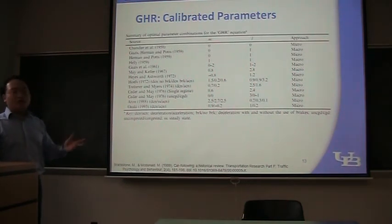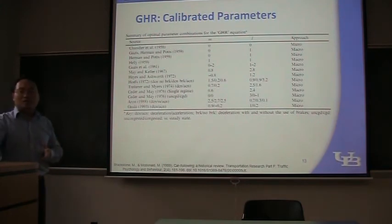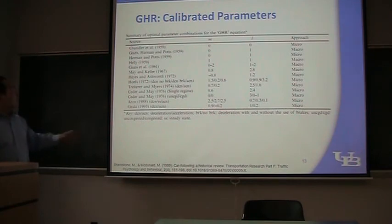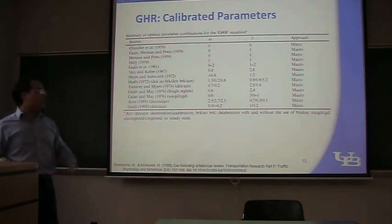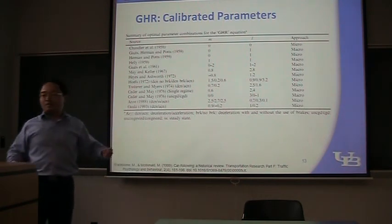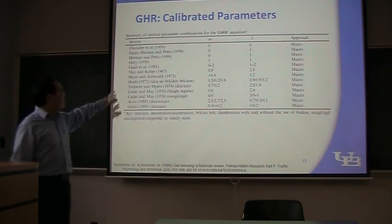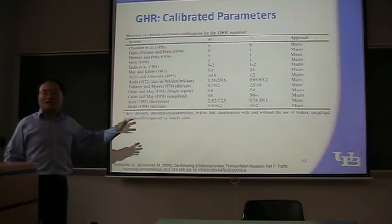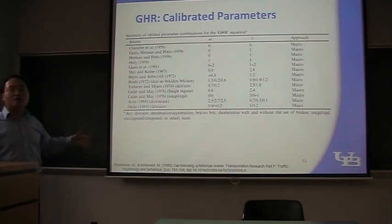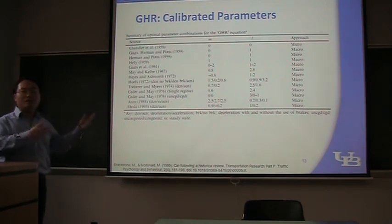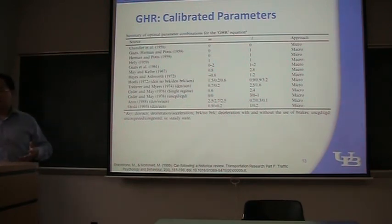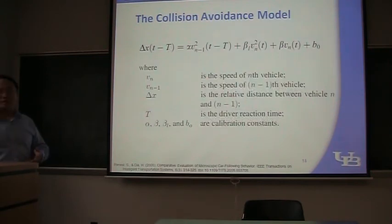And they argue for different drivers, their reaction times should be different. Right? Different drivers, and for different vehicles and for different roads or weather conditions, the parameters should be different. So this is the most famous model, but it has a lot of limitations. The biggest limitation, I said, is it's not very reasonable. It's only based on statistics.